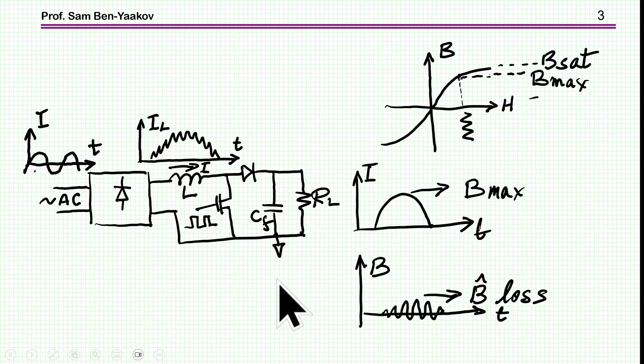So here is the problem we are talking about. This is a generic representation of the power factor correction circuit, a boost converter. We have an AC voltage coming in, a rectifier, and then a boost converter with the output voltage here. We are forcing the current through this inductor to be a rectified sinusoidal waveform, following the input voltage. This is the principle of Active Power Factor Correction.